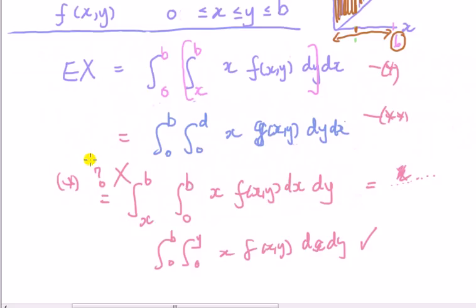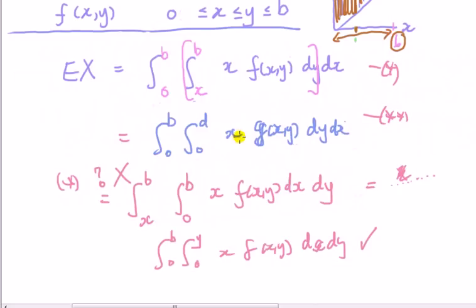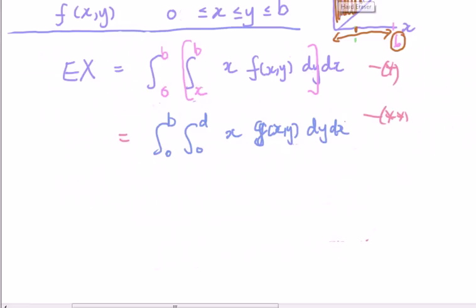But how about if we consider a case where, so that case I've just considered is a case where the limits depend on each other. Let's consider a case where they do not depend on each other, like two. So if we, for case two, we swap these two guys around, swap that around, and then we look at this thing. Okay, so let's just do that.